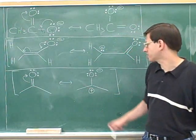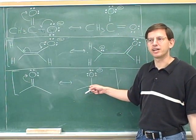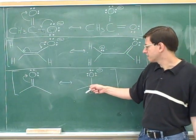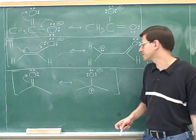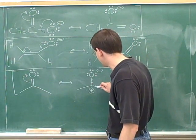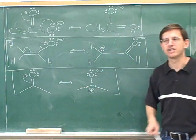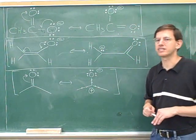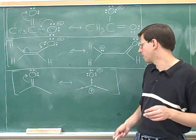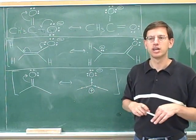Another problem with this resonance structure is that this carbon does not have a complete octet anymore. If you count around the carbon, it now only has six electrons around it — two from each sigma bond. This carbon only has a sextet, not an octet. We know that atoms generally prefer to have octets, so that also tends to make this a less significant resonance structure.